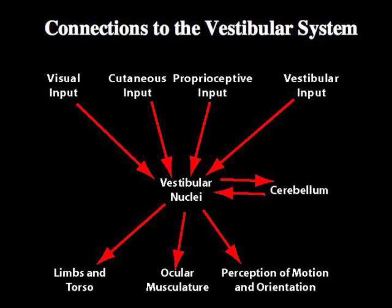All this information feeds into a system which we call the vestibular system, which is the primary centre of balance, centred around the vestibular nuclei in the brainstem and the cerebellum.